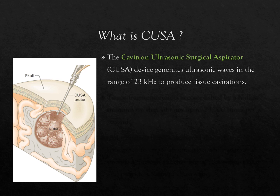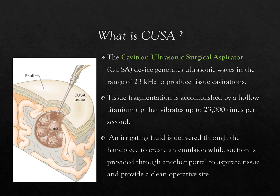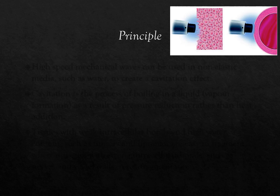The Cavitron Ultrasonic Surgical Aspirator is a device which generates ultrasonic sounds in the range of 23,000 hertz to produce tissue cavitation. Tissue fragmentation is accomplished by a hollow titanium tip that vibrates up to 23,000 times per second. An irrigating fluid is delivered through the handpiece to create an emulsion, while suction is provided through another portal to aspirate the tissue and provide a clean operative field.